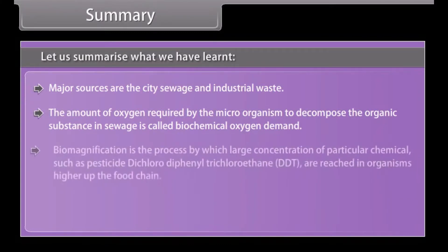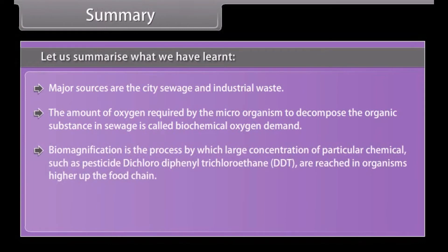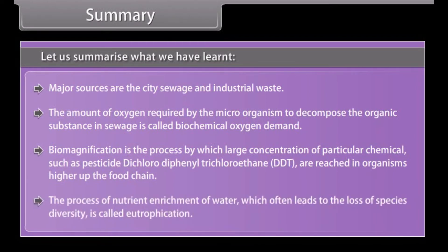Biomagnification is the process by which large concentrations of a particular chemical such as pesticide dichlorodiphenyl trichloroethane (DDT) are raised in organisms higher up the food chain. The process of nutrient enrichment of water which often leads to loss of species diversity is called eutrophication.